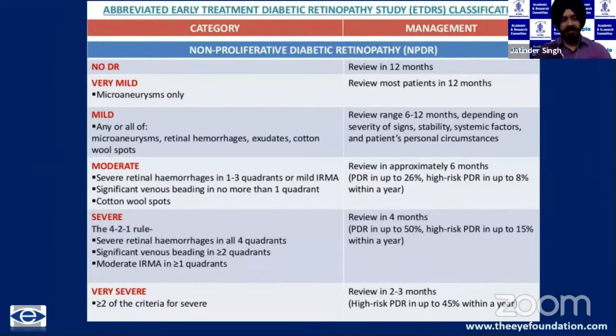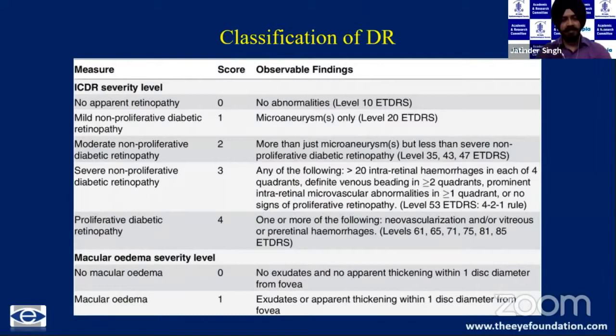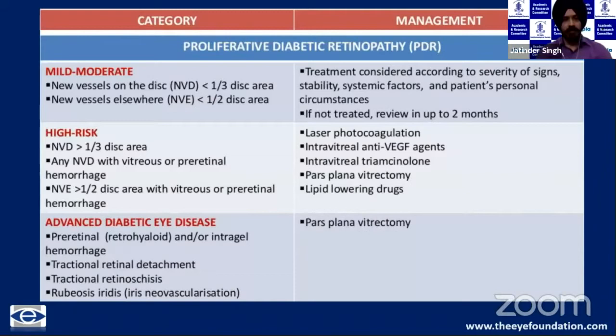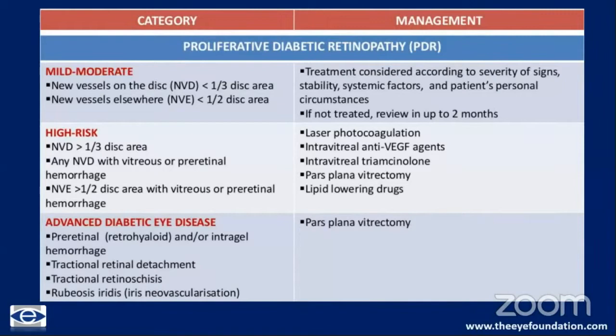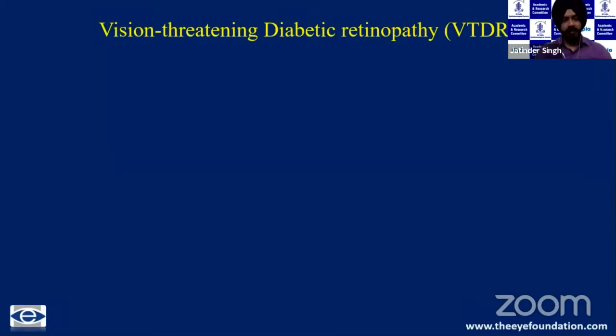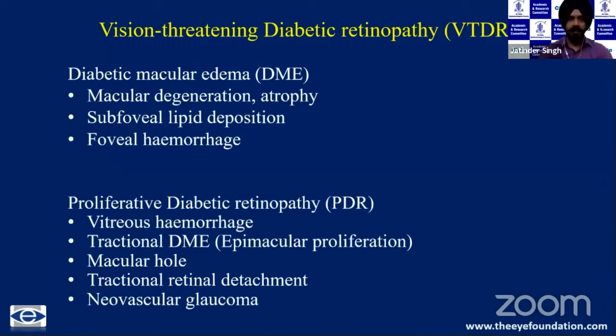There are various classifications, the most commonly used being the abbreviated ETDRS classification with the classic 4-2-1 rule of severe NPDR, ranging from mild NPDR through high-risk disc and advanced PDR. Other classifications assign scores to disease level, guiding follow-up periodicity and management. From a community ophthalmology perspective, it suffices to classify diabetic retinopathy into vision-threatening — which includes diabetic macular edema and proliferative diabetic retinopathy — and non-vision-threatening disease.